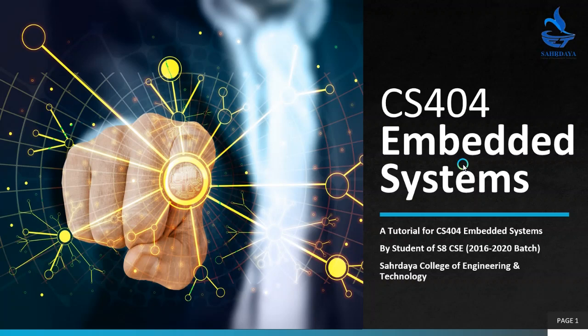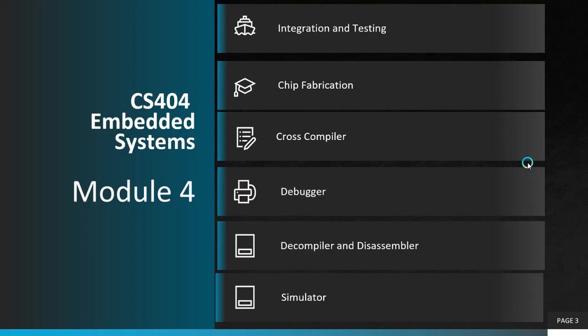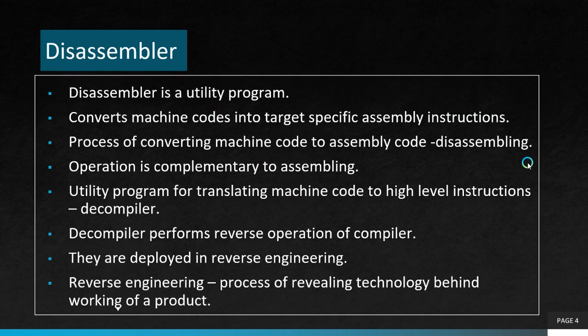Hello, my name is Don. Today we are going for the topic on embedded system CS404 on disassembler. This is our fifth topic. As we all know, a disassembler is a utility program that mainly converts machine code to specific target assembly instructions.